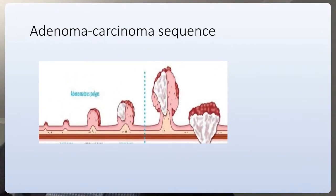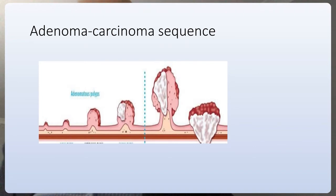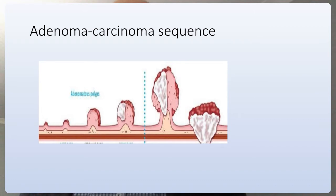When a polyp develops, it begins as a collection of dysplastic epithelium in a crypt in the wall of the colon, forming an early adenoma around five millimeters to one centimeter. Once it reaches about one centimeter it acquires more mutations, becoming an advanced adenoma with high-grade dysplasia. From there we move to cancer in a polyp — invasive but limited to the polyp and curable by removal — and finally to invasive cancer that has invaded the submucosa or beyond.